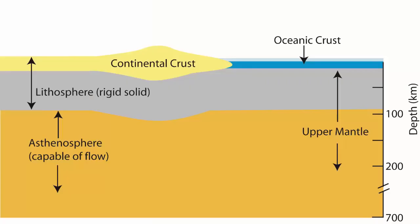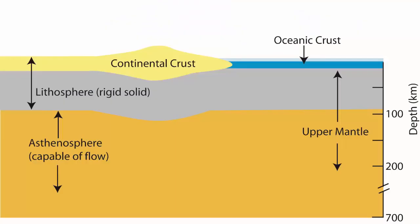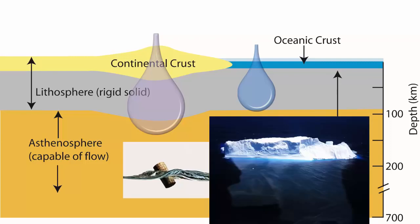The plasticity of the underlying asthenosphere allows the overlying lithosphere to sink into it, much like icebergs or wood floating in the water. The denser lithosphere portions that contain ocean crust will sink lower and be thinner. The less dense lithosphere that contains continental crust will be much thicker and ride higher, as well as extend deeper — again like an iceberg. We call this process of lithosphere sinking into asthenosphere isostasy.